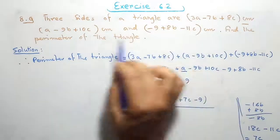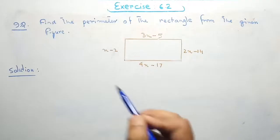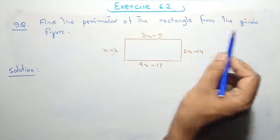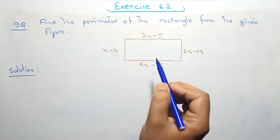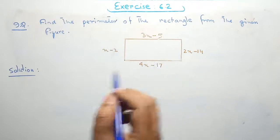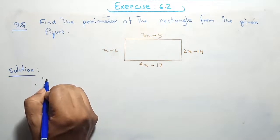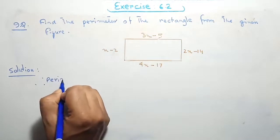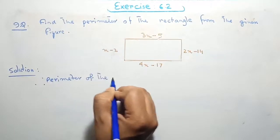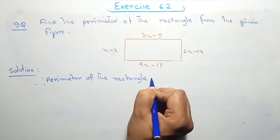The unit is centimeters, so we write centimeters. Question 9: Find the perimeter of the rectangle from the given figure. From this figure, we need to find the perimeter of the rectangle. Therefore, perimeter of the rectangle is equal to the sum of all expressions for all sides.